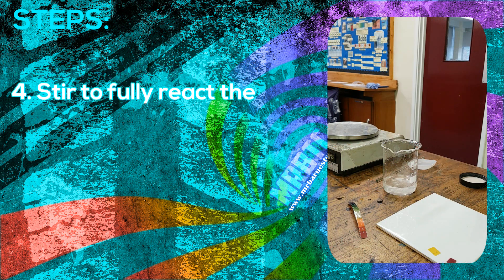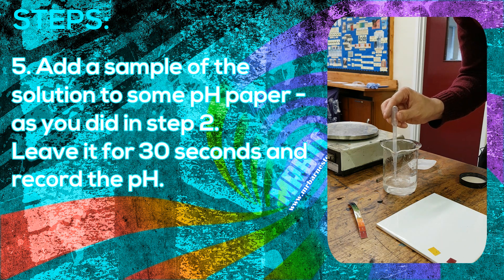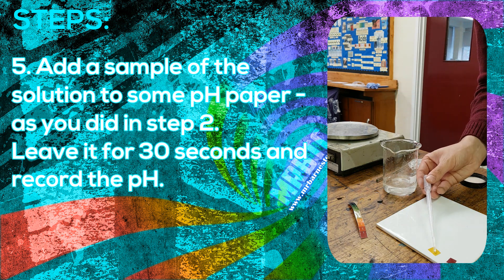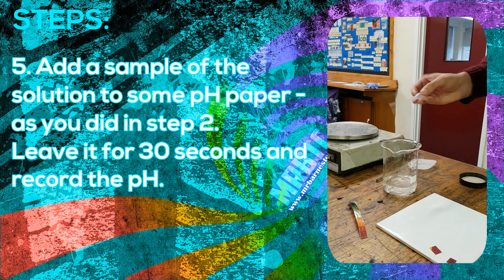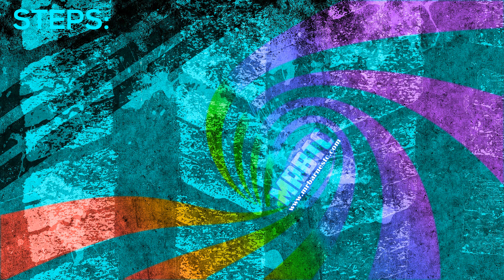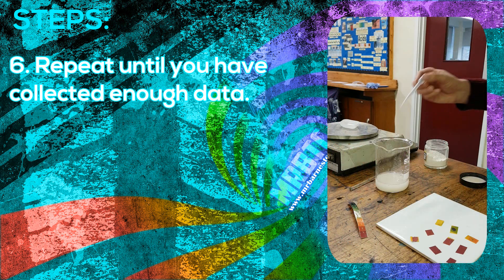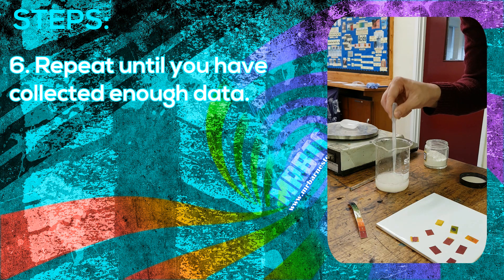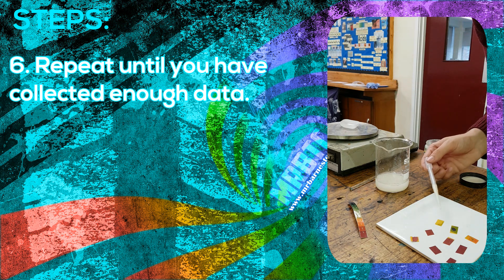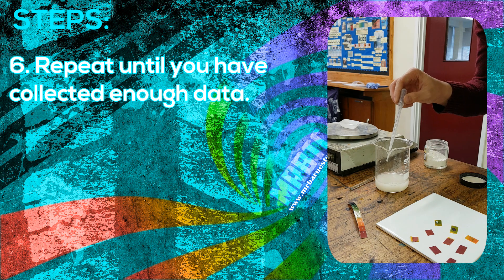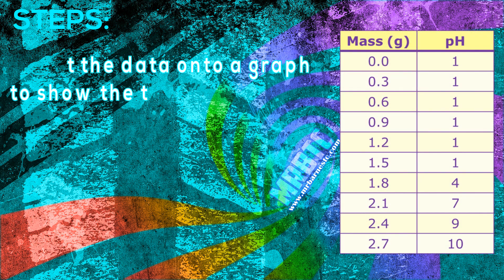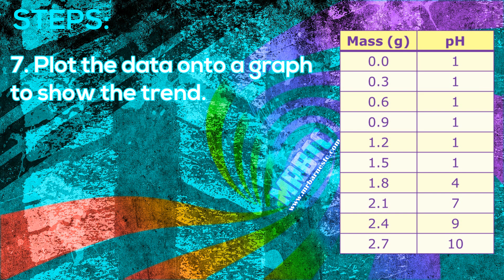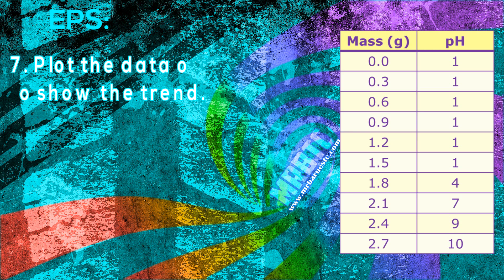Now you need to repeat step two: take a sample of your solution, add it to your pH paper, leave it for 30 seconds and record the pH. The final step is to repeat this until you've collected enough data that you can actually see a trend. Once you've collected all that data, your next thing to do is to take it and plot it into a graph so you can actually show the trend produced.